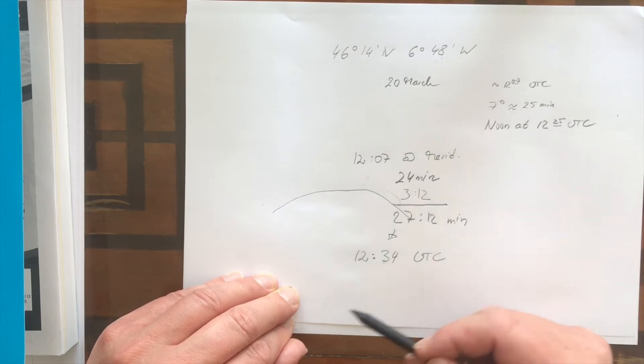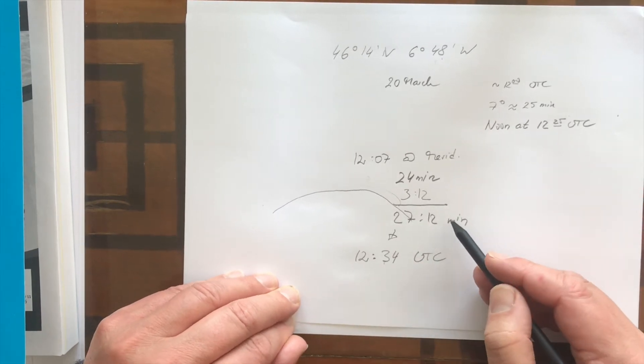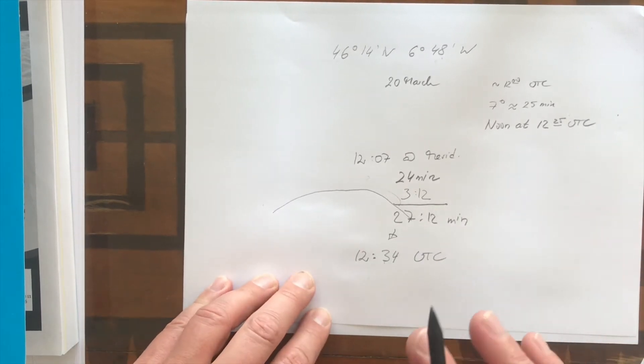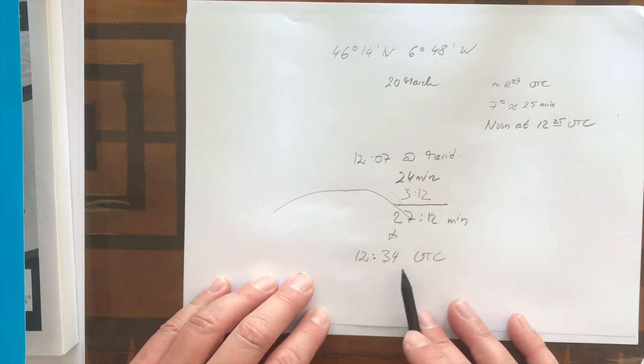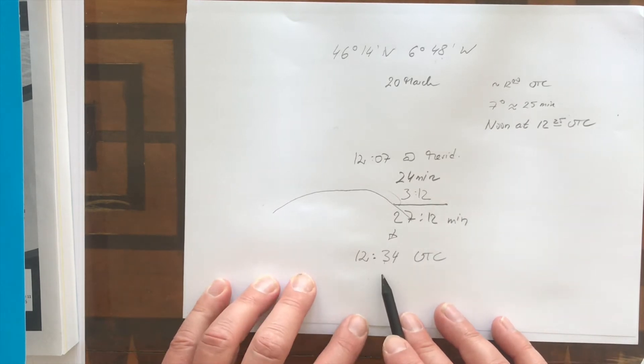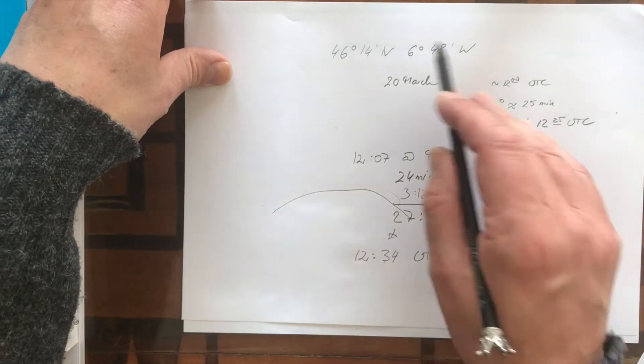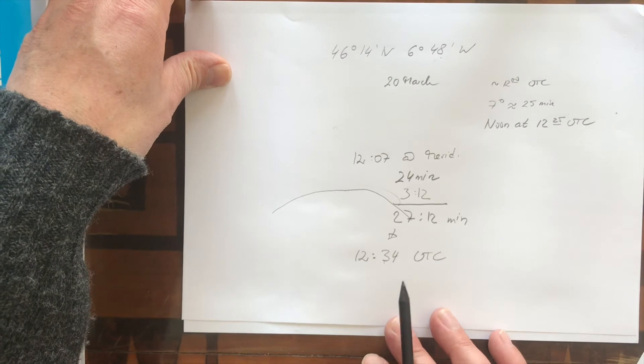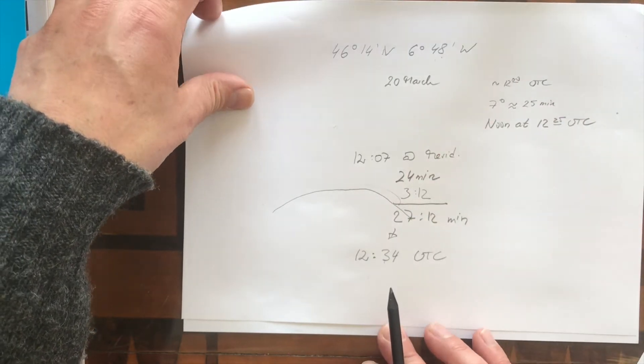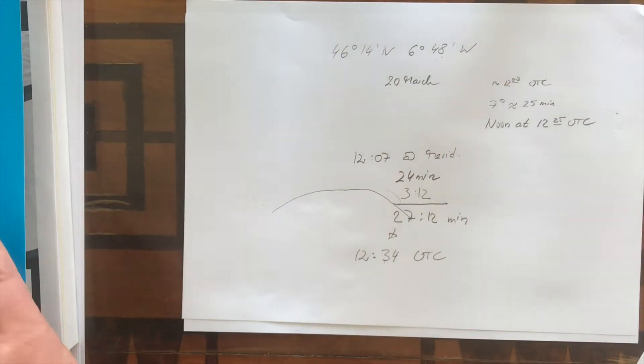More importantly, this is a good exercise when it comes to shooting planets, stars, and Polaris, which is a star as well. Because then we have to calculate twilight. So this becomes very important.